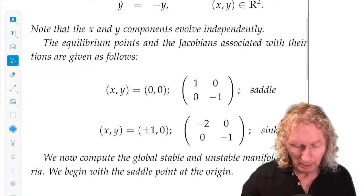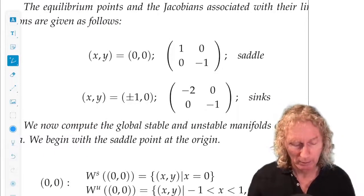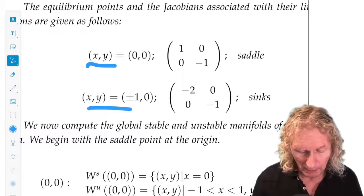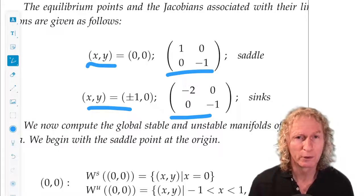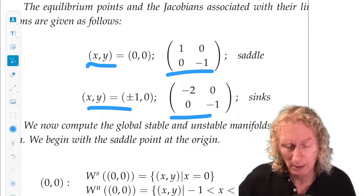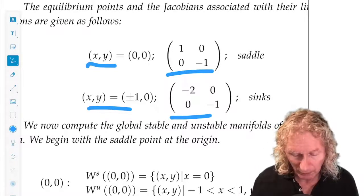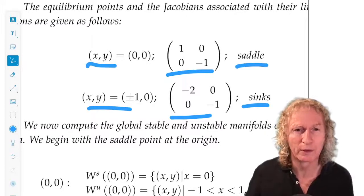Okay, so I linearize about each of those equilibria that I just mentioned. And these are the Jacobians associated with the linearization. The equations are decoupled, so it comes out diagonal, which is nice. And we see one's a saddle, the origin is a saddle, and the other two are sinks.